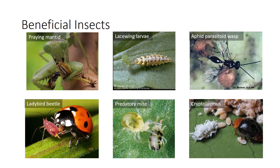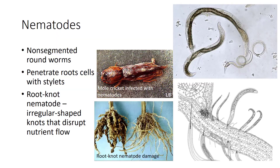Nematodes are worm-like invertebrates that lack appendages, are non-segmented, and are found in the soil. Some nematodes are beneficial, whereas others cause major problems in a wide range of horticultural crops. The most common nematodes are the root knot and cyst nematodes. Nematodes feed by penetrating root cells with a hollow stylet mouth structure and injecting enzymes into the cells, causing digestion of the root cell. Nematodes can also cause secondary infections by fungi and bacteria. The root knot nematode produces irregular-shaped knots that disrupt nutrient flow in plants and lead to yellowing and stunted growth.